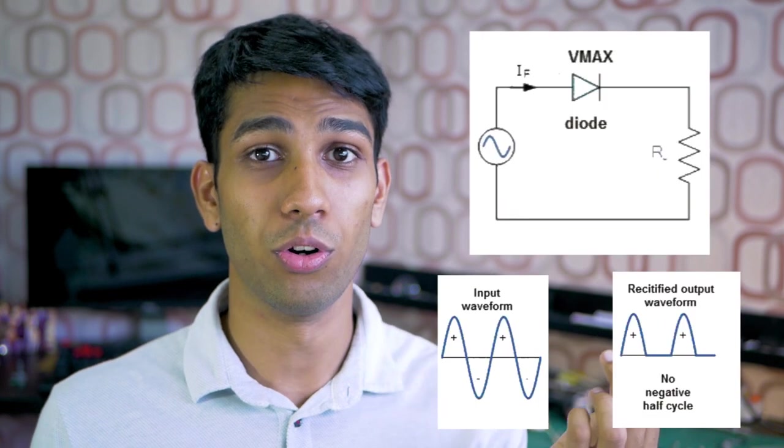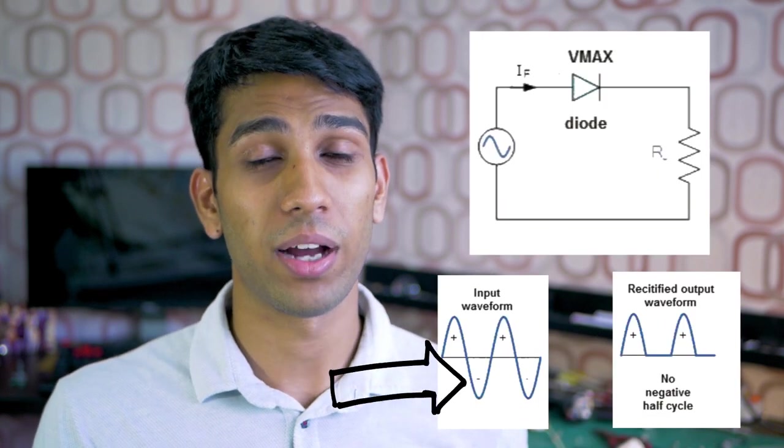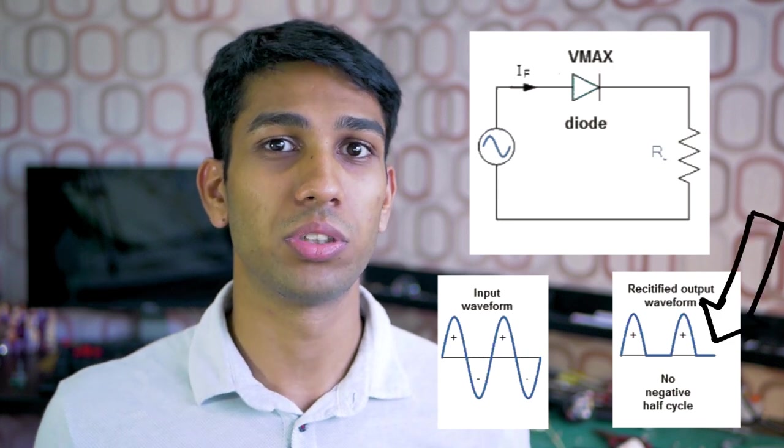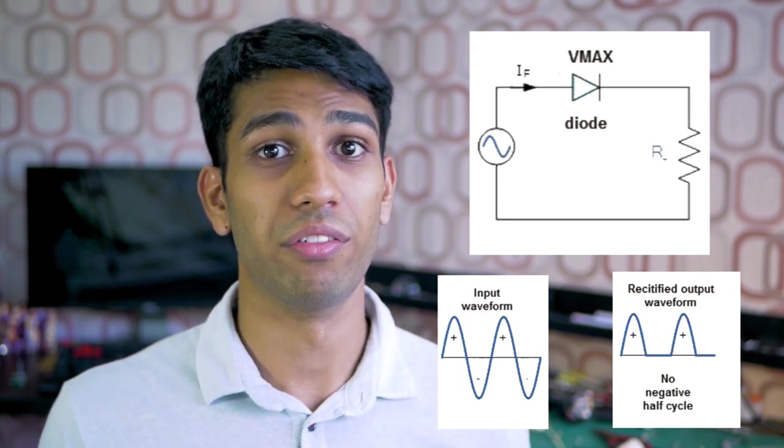By just using a simple diode, we can cut out all the negative parts of the signal of an AC voltage and convert it into a DC voltage using a technique called half-wave rectifying.